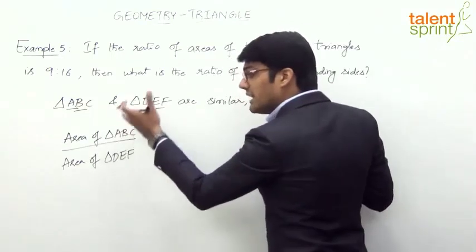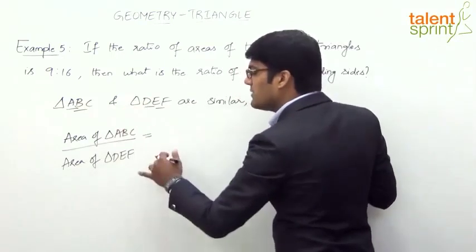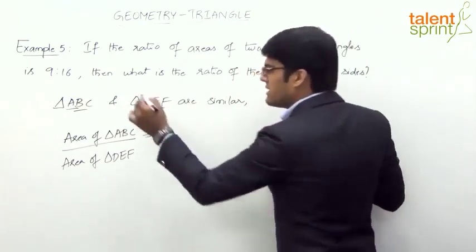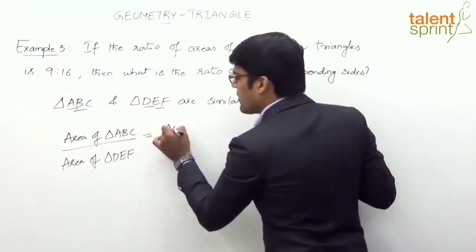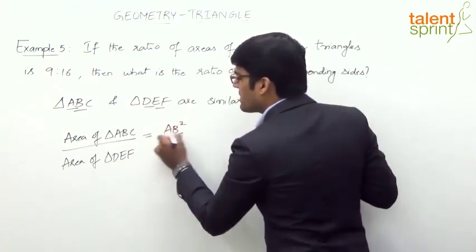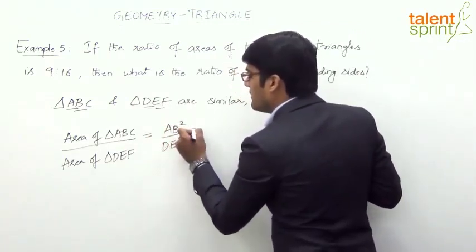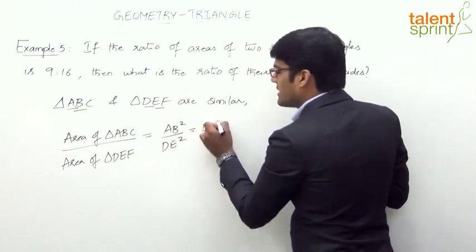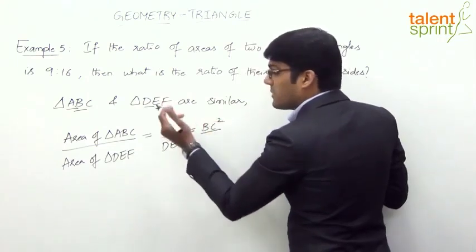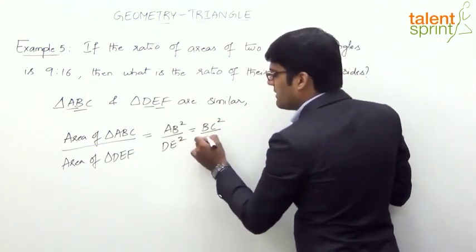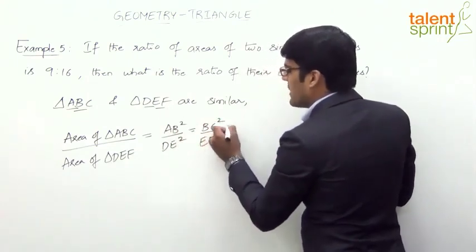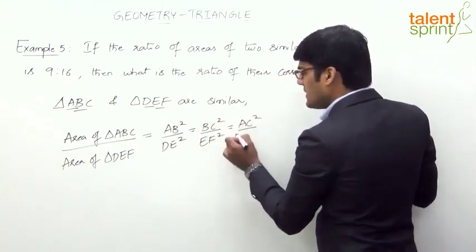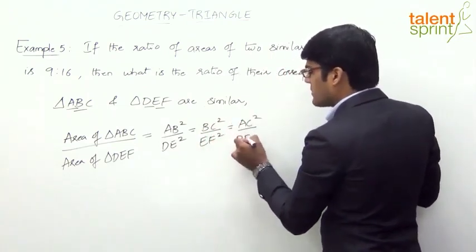So the ratio of the areas of the two triangles will be equal to AB squared by DE squared, which equals BC squared by EF squared, and also equals AC squared by DF squared.